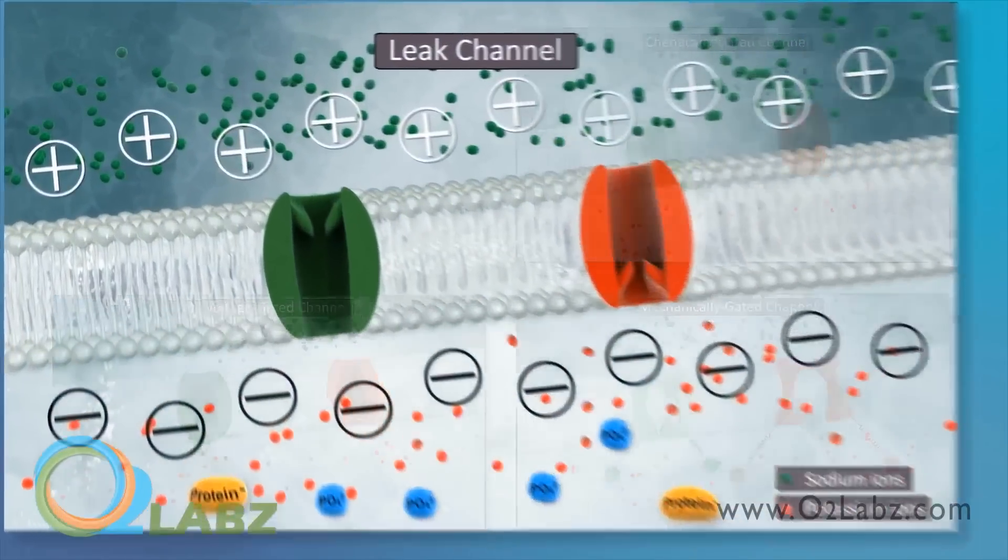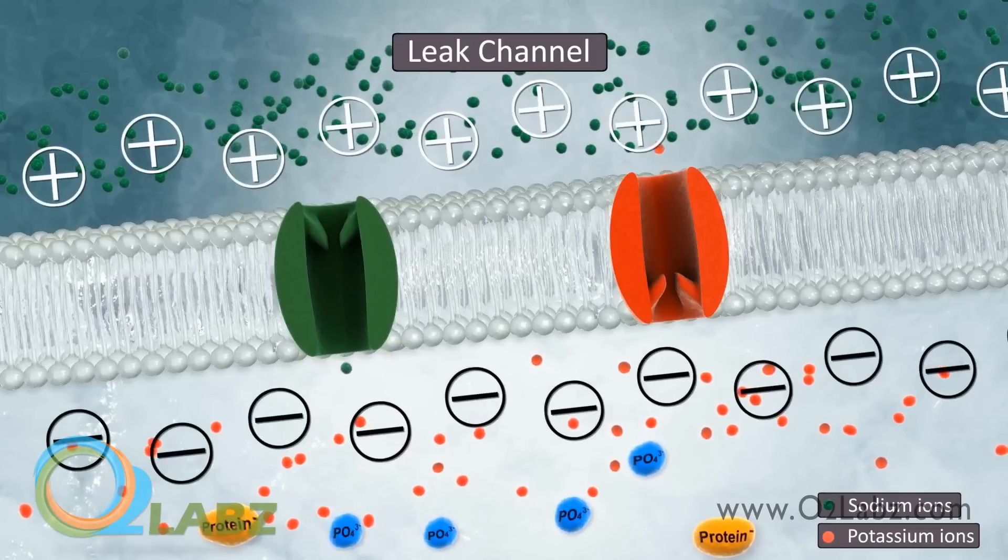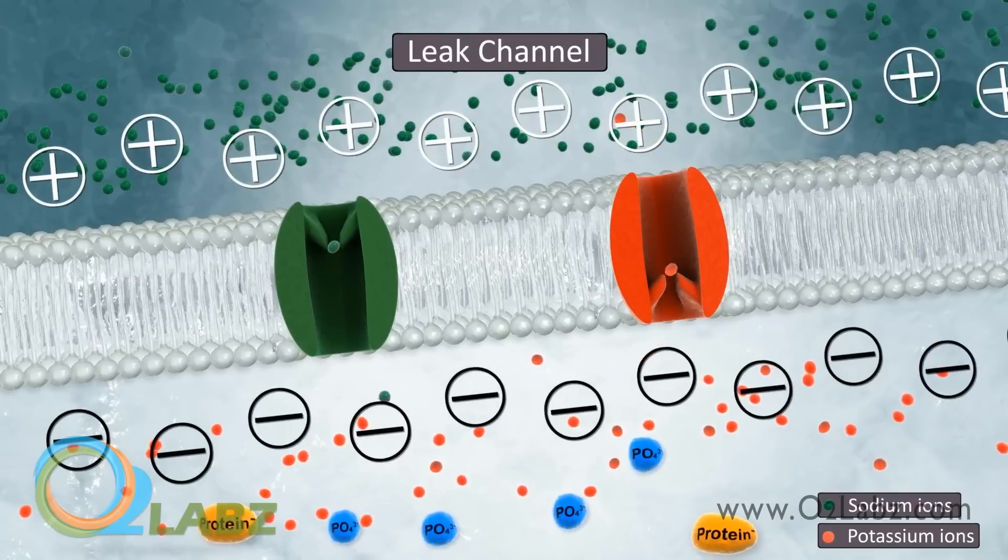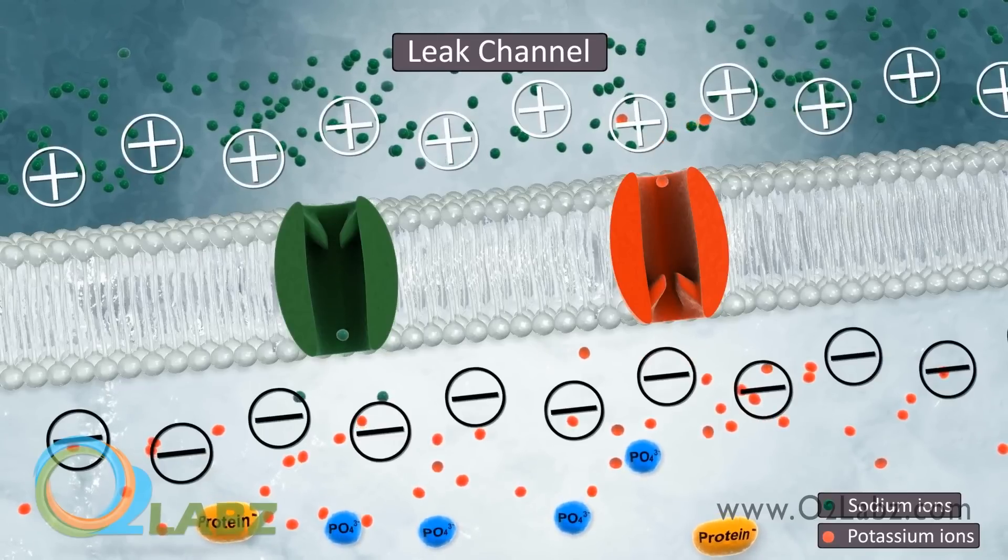A leak channel allows only a trickle of sodium or potassium ions to diffuse through the membrane. Leak channels contribute greatly to the generation and maintenance of the resting membrane potential.